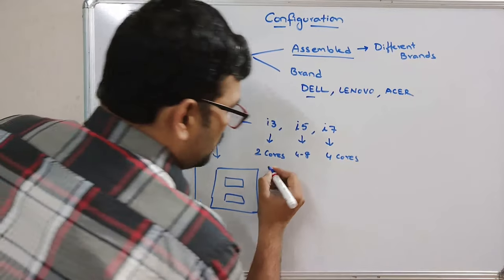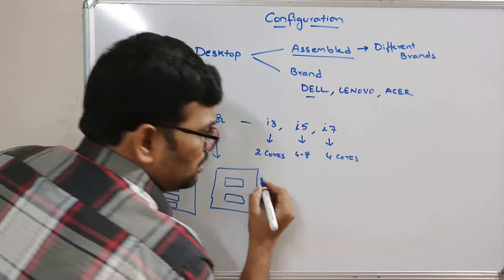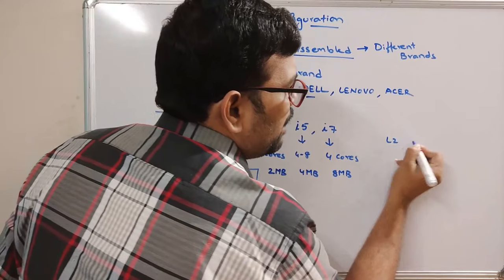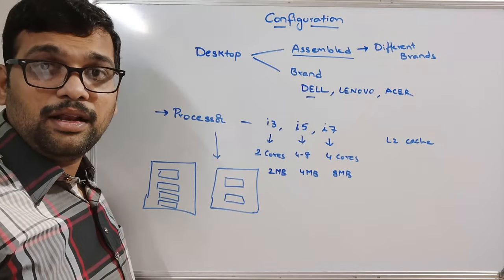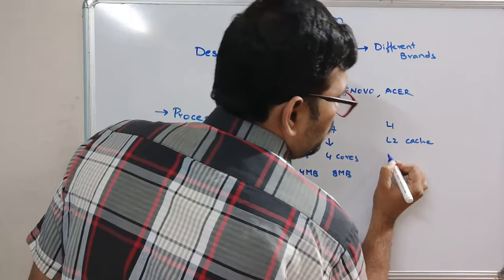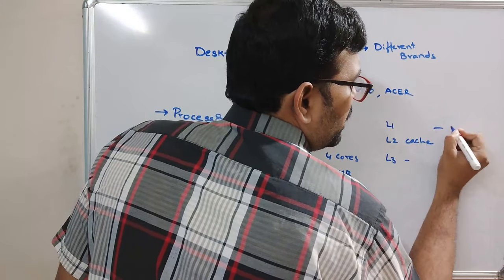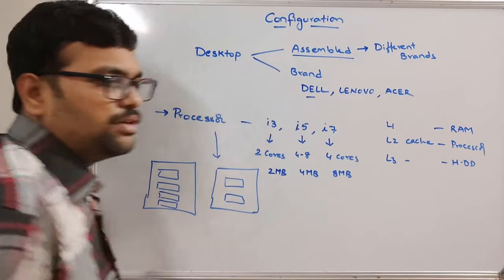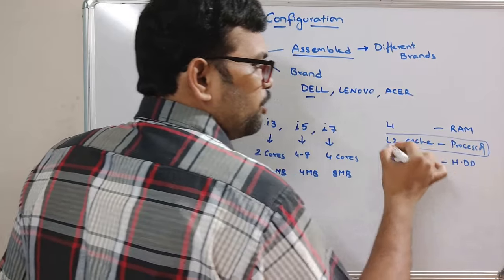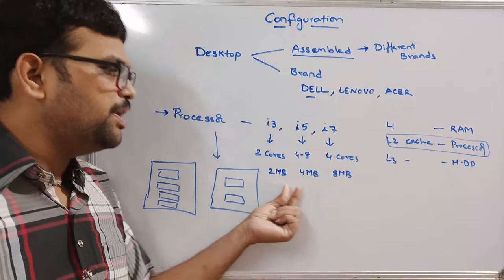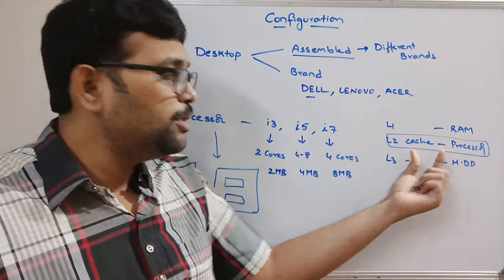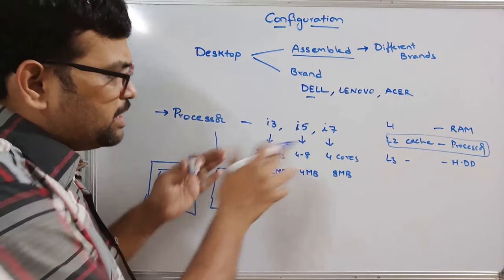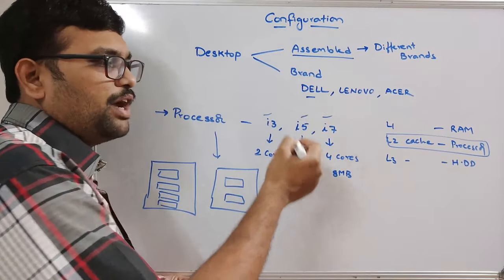Another difference is cache memory. The i3 has about 2 MB of cache, i5 has about 4 MB, and i7 has about 8 MB — this is called Level 2 cache memory. There are different types of cache memories: L1, L2, and L3. L1 cache resides on the RAM, L2 is on the processor, and L3 is on secondary storage. Increasing this cache memory automatically increases response time, making the system respond very fast.